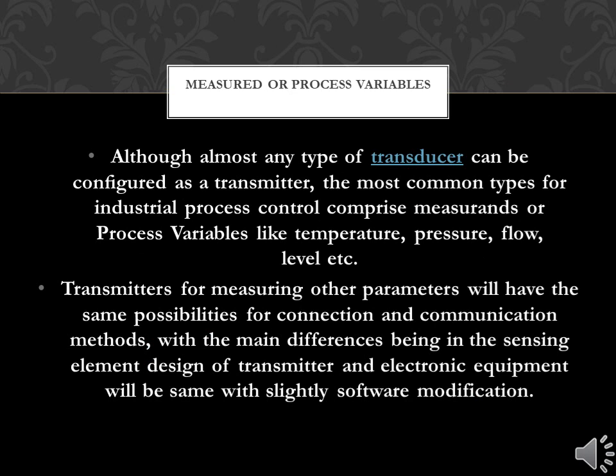Measured or process variables: although almost any type of transducer can be configured as a transmitter, the most common types for industrial process control comprise measurands or process variables like temperature, pressure, flow, level, etc. Transmitters for measuring other parameters will have the same possibilities for connection and communication methods, with the main differences being in the sensing element design. The electronic equipment will be the same with only slight software modification.